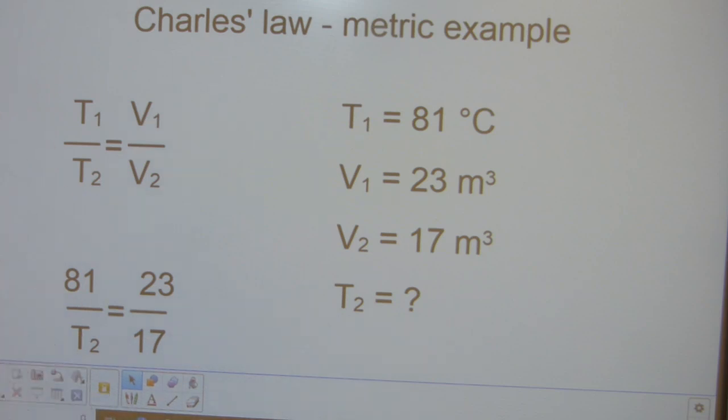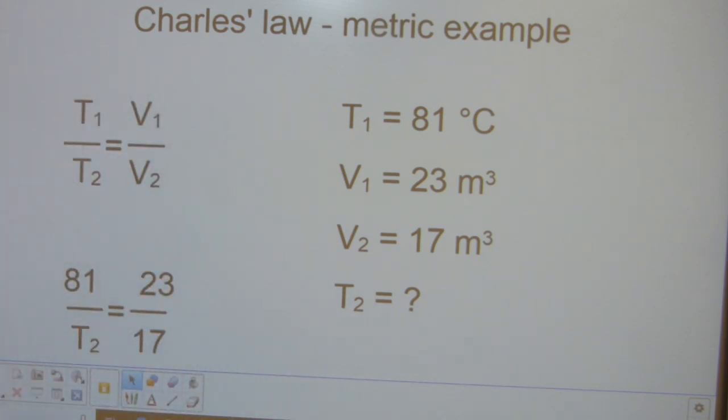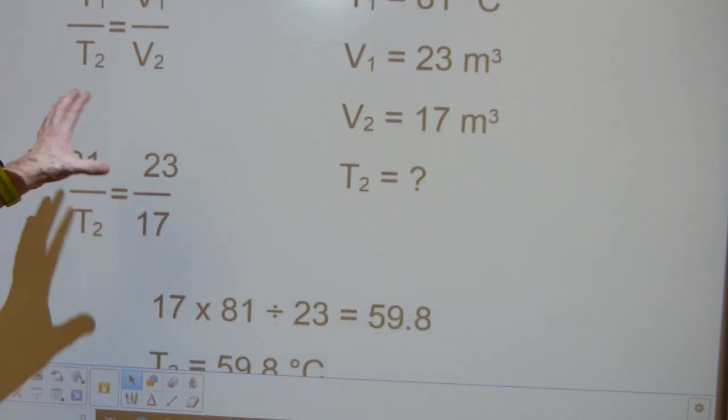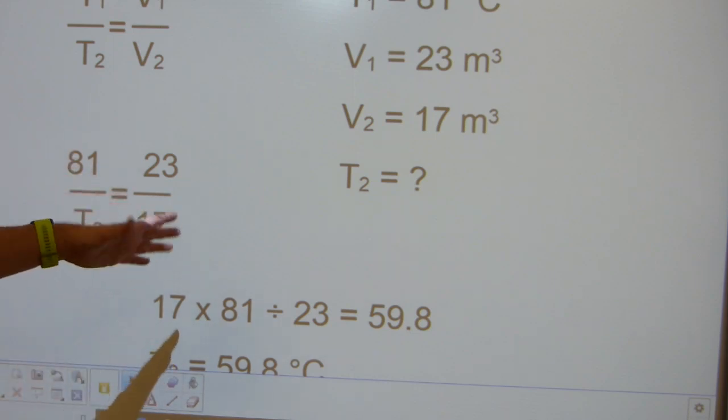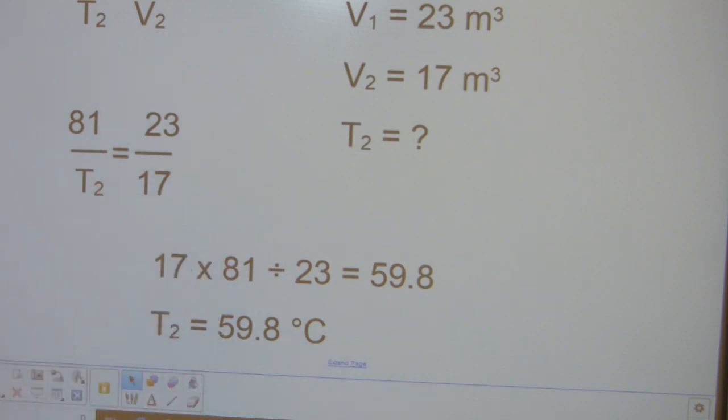Same procedure, pick one of the equations that you like, then replace the letters with the given numbers. Out of the three numbers, two of them will be on a diagonal, and you can multiply those together and divide by the third number. When you enter it into a calculator, this is what you'll see: 59.8 degrees Celsius.